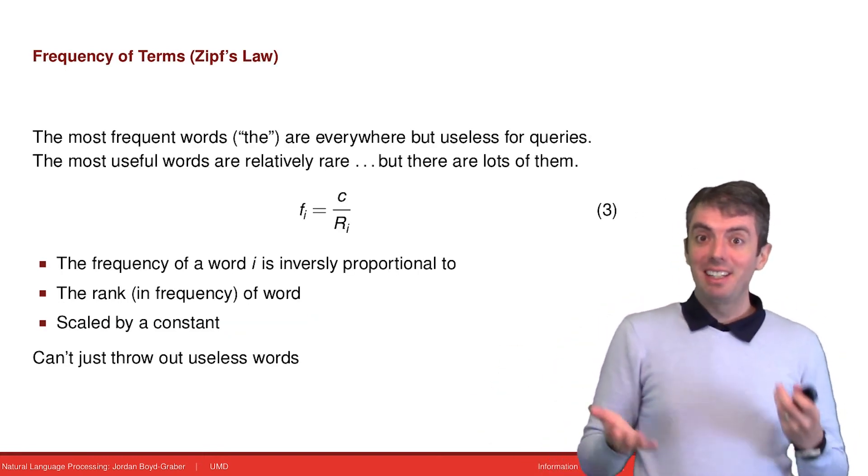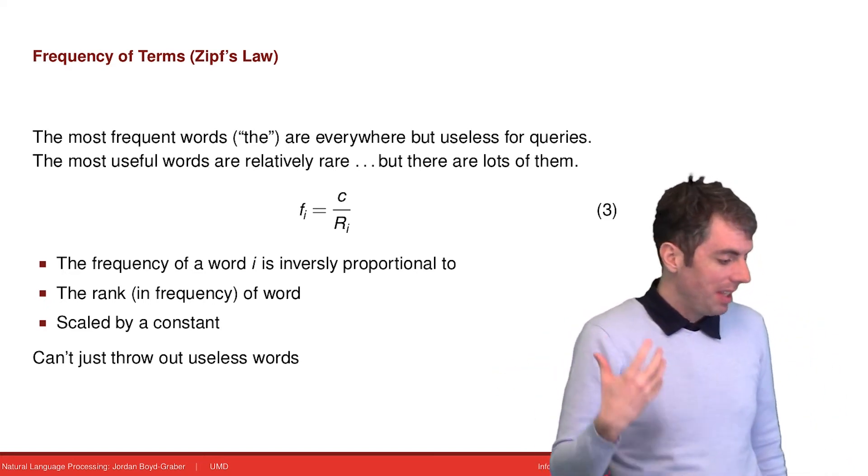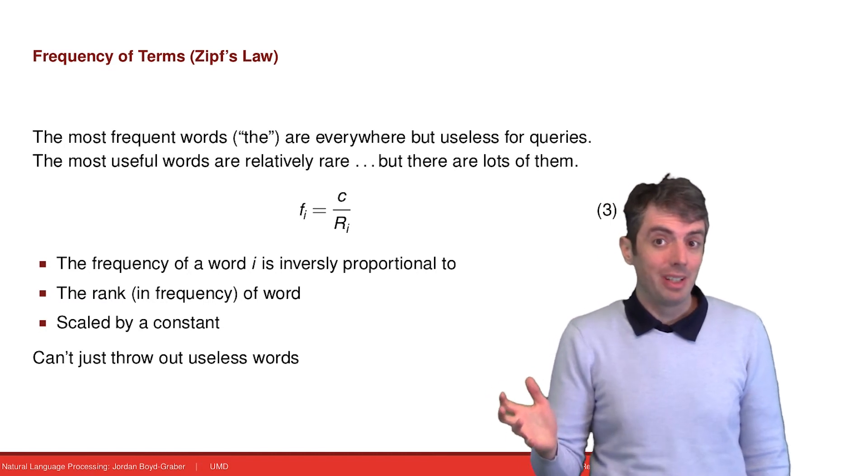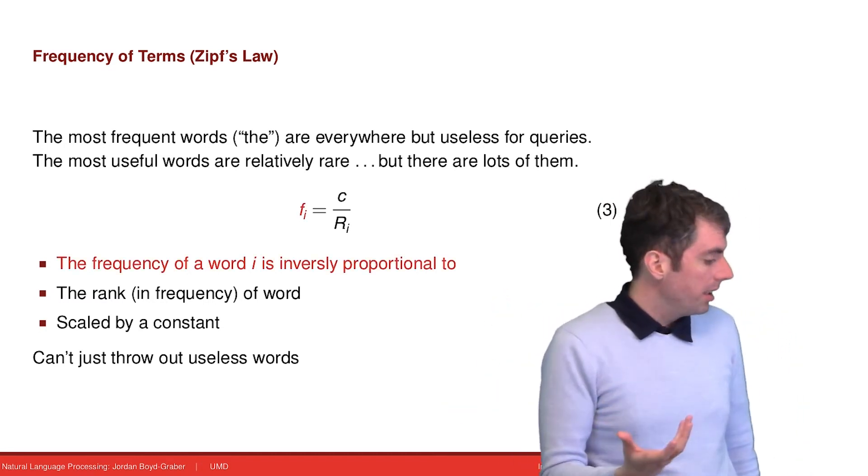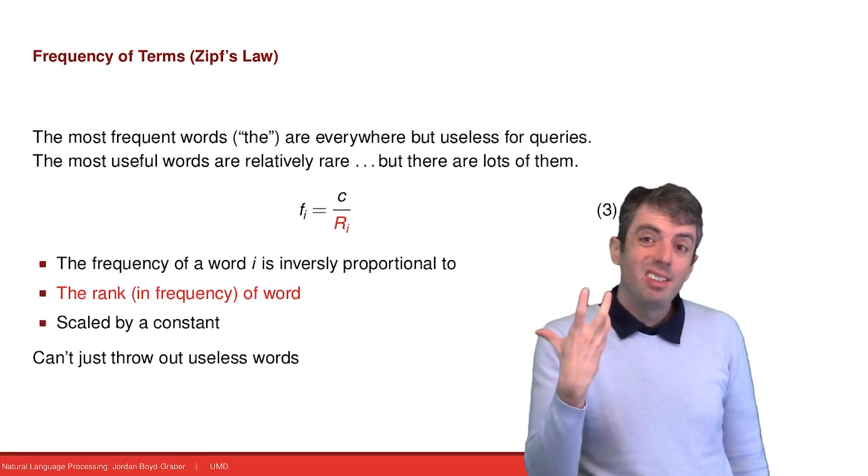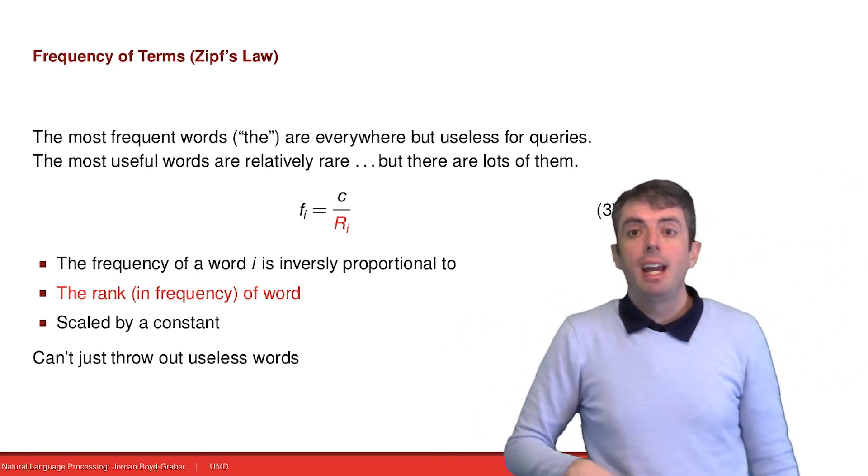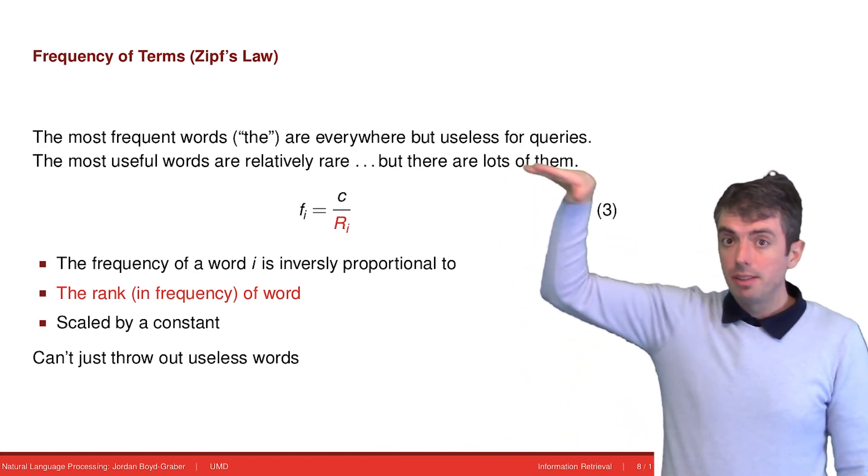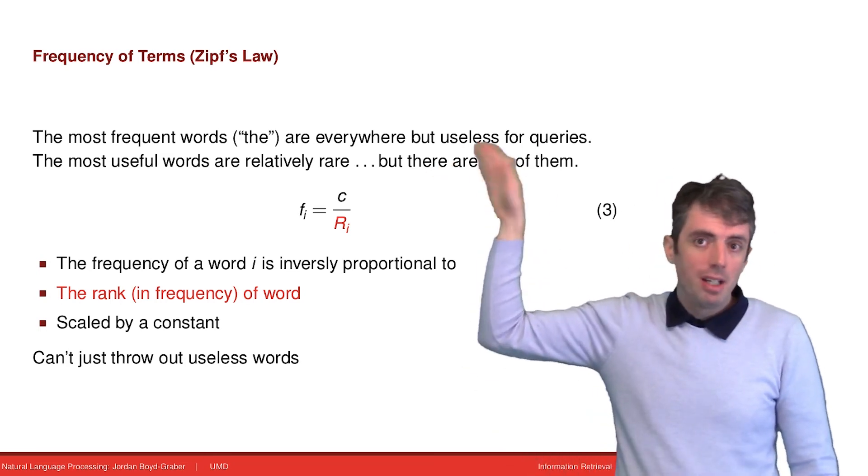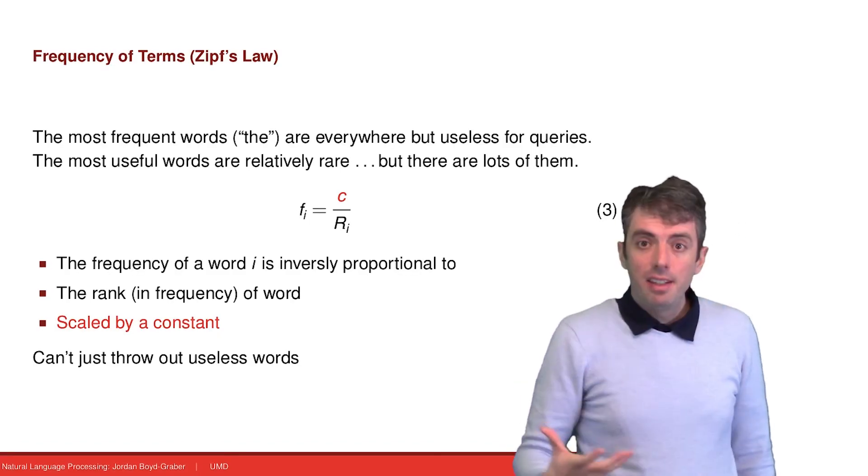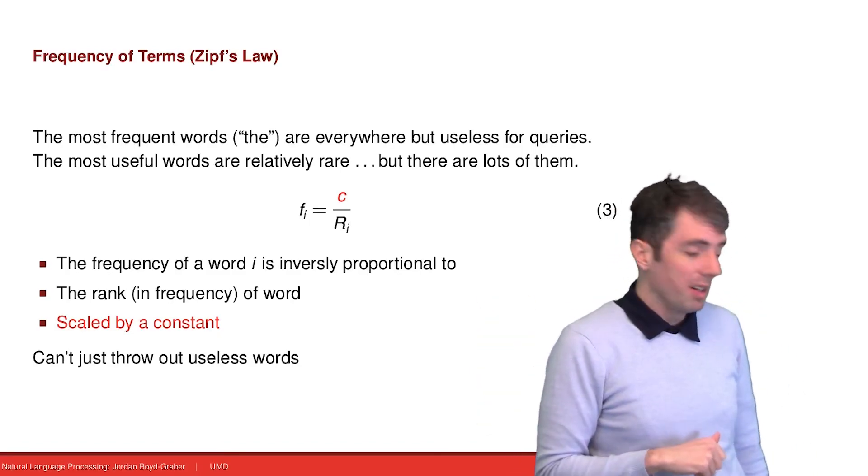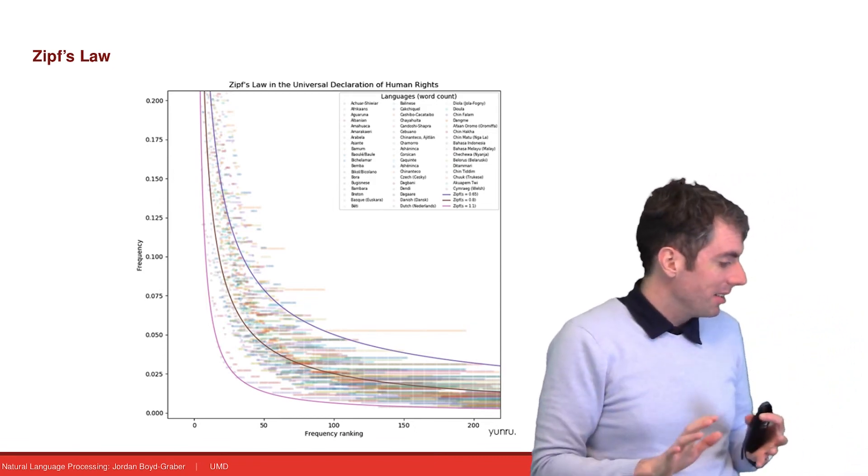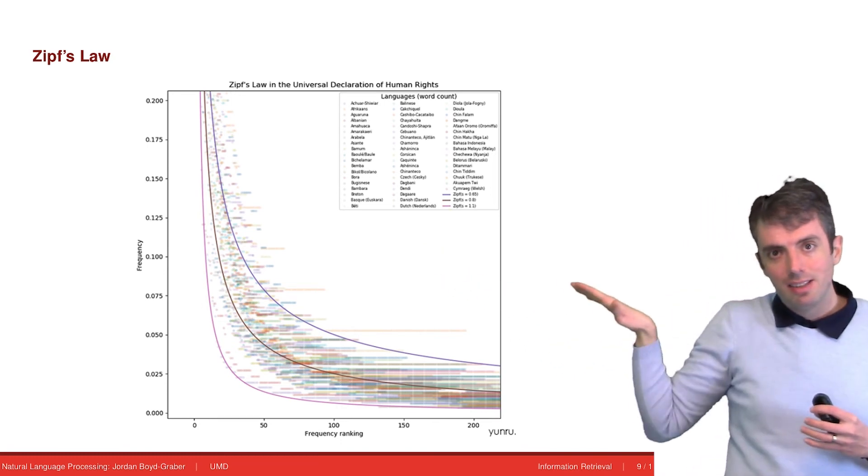While there aren't many laws in natural language processing, we're lucky in that we get to talk about two today. Zipf's law captures how many useful words there are for doing things like information retrieval. And the short version of the story is that there are a lot of useful words. The frequency of a word is inversely proportional to the rank frequency of the word. So if you take all the words in a vocabulary and you start with 'the' and then you go down to the least frequent word, and you just order them like that, and for any given word you can see where it lands in the ranking. So 'the' is number one, 'of' is number two, and so on. And then you scale that by some constant. This does a really good job of capturing how frequent the word is. And if you actually plot what this looks like for many different languages, you get a very nice pattern and a consistent long tail of words.